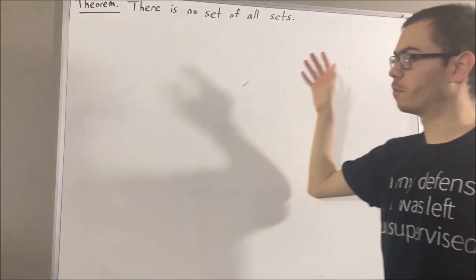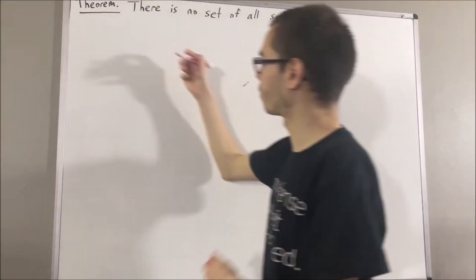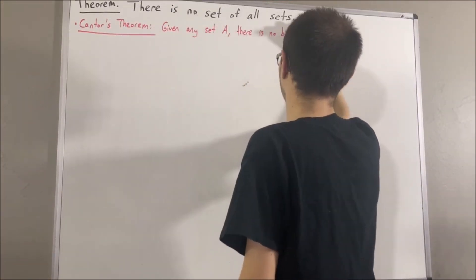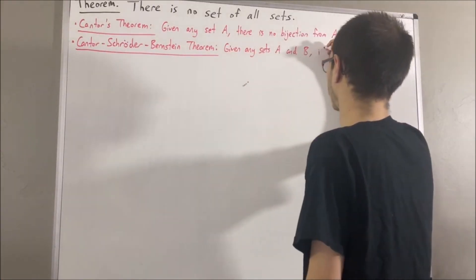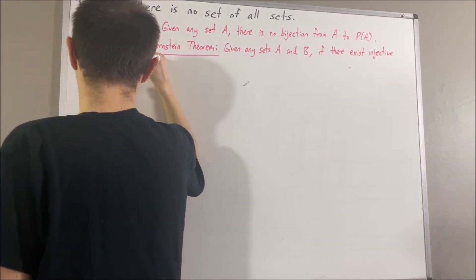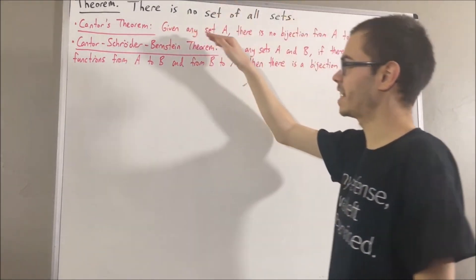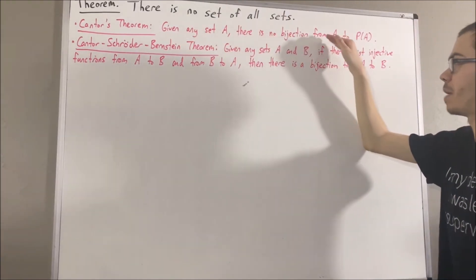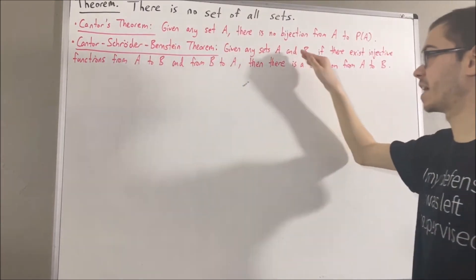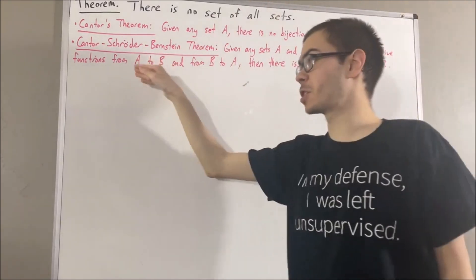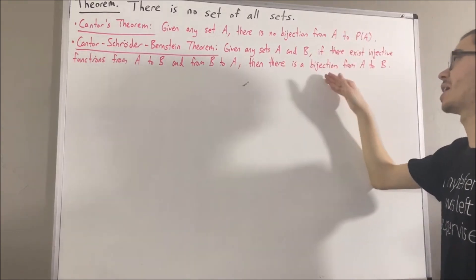In this proof, we are going to be using Cantor's theorem and the Cantor-Schroeder-Bernstein theorem, which state the following. Cantor's theorem tells us: given any set A, there is no bijection from A to the power set of A. And the Cantor-Schroeder-Bernstein theorem tells us: given any sets A and B, if there exists an injective function from A to B, and there exists an injective function from B to A, then there exists a bijection from A to B.